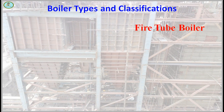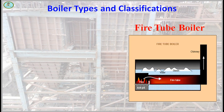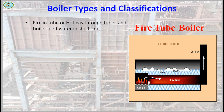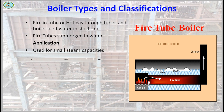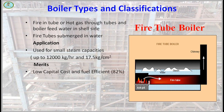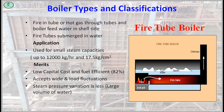Fire tube boilers: in a fire tube boiler, hot gases pass through tubes surrounded by boiler feed water. Fire tube boilers are used for small steam capacities up to 12,000 kg per hour and 17.5 kg per cm². Merits include low capital cost, fuel efficiency up to 82%, accepts wide load fluctuation, and steam pressure variation is less due to large volume of water. Also available as packaged boilers.